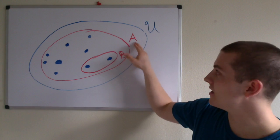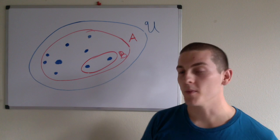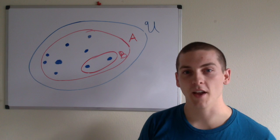These lines have been labeled B, A, and U. We can say that B is a subset of A because all elements of B are elements of A.